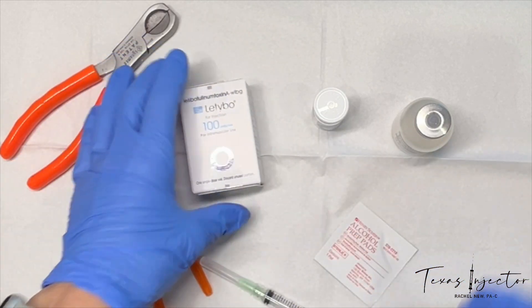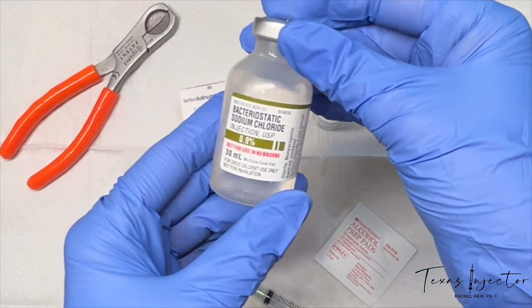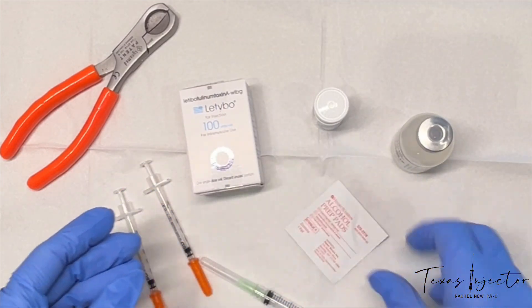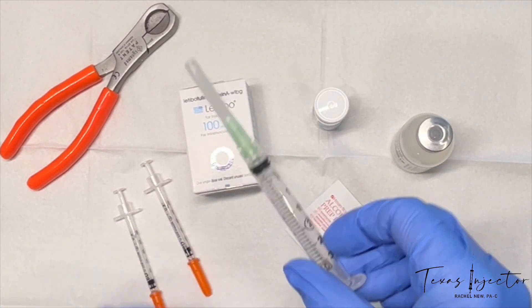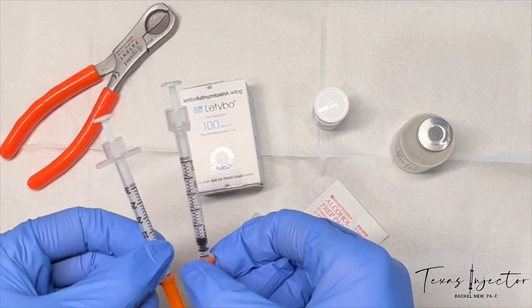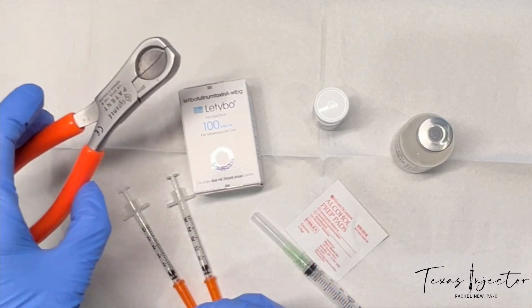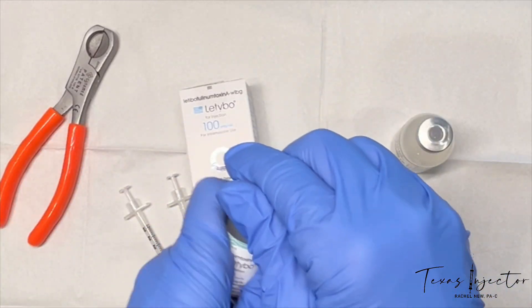What you'll need to blend is your bacteriostatic sodium chloride, an alcohol wipe, a 3 ml syringe, your insulin syringes, and something to take the lid off. Let's get started.